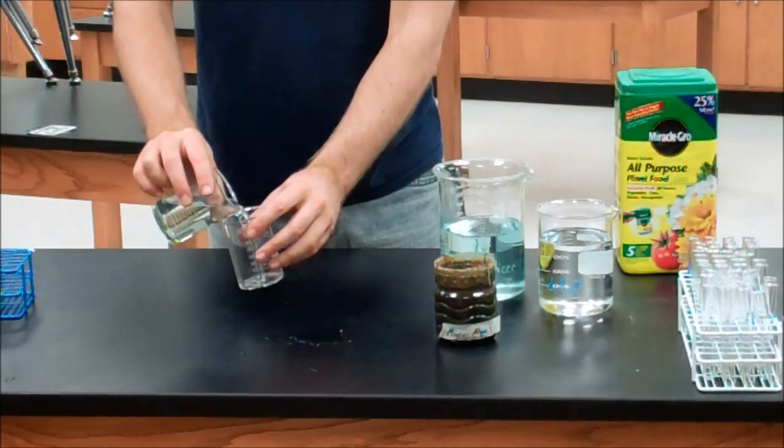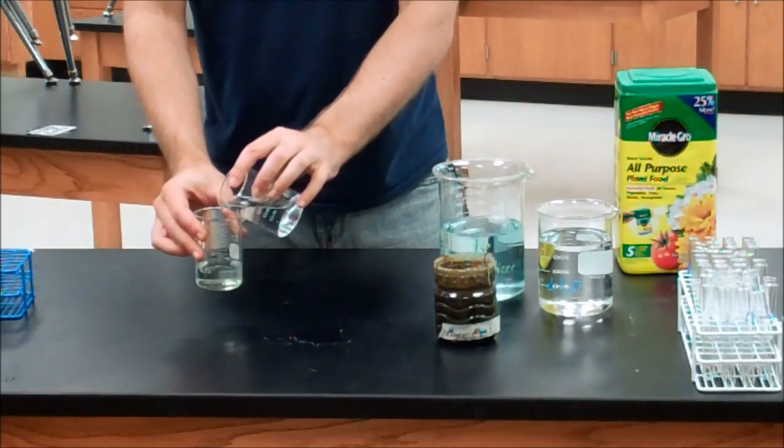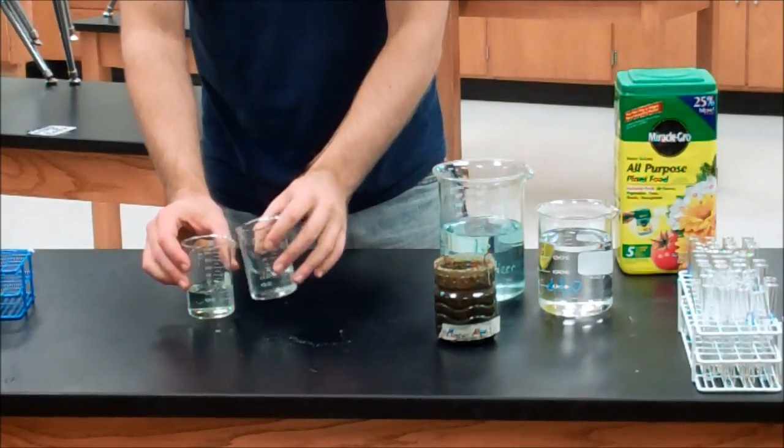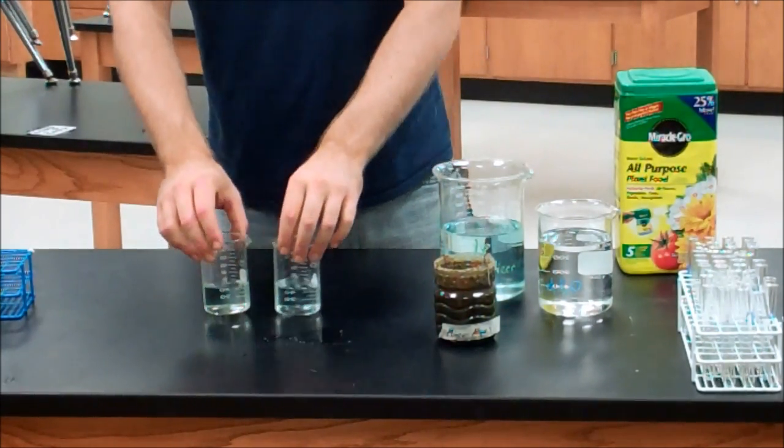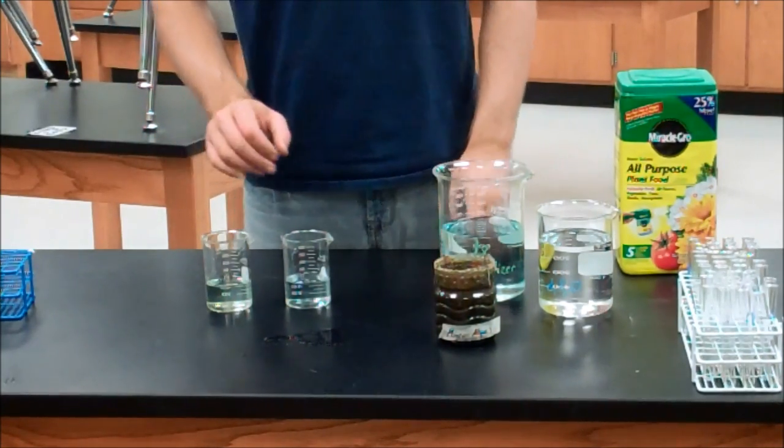And from here we're going to cut it in half. So whenever our two volumes look to be pretty close to equal we now have exactly half the original volume of our original concentration.